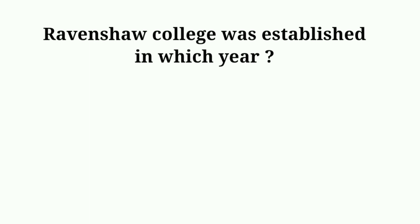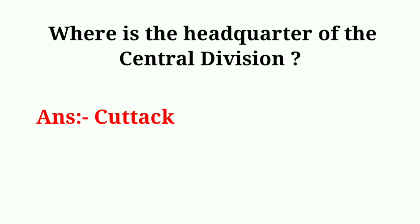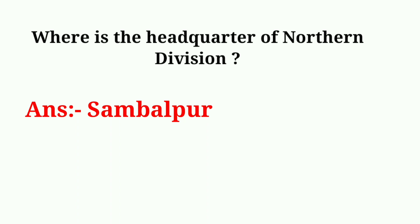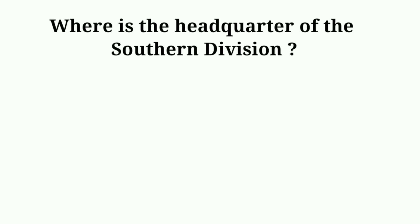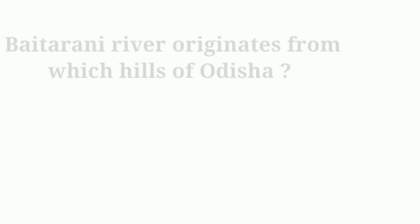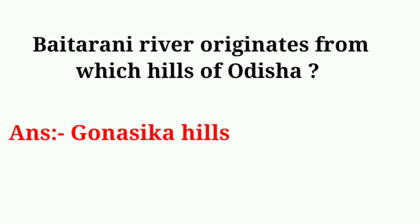Ravenshaw College was established in which year? Answer: 1868. Where is the headquarter of the Central Division? Answer: Cuttack. Where is the headquarter of the Northern Division? Answer: Sambalpur. Where is the headquarter of the Southern Division? Answer: Berhampur. Vaitarani river originates from which hills of Odisha? Answer: Gonasika hills.